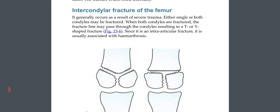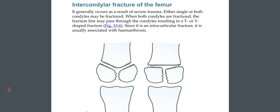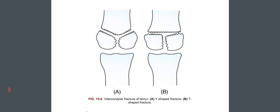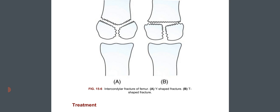Intercondylar fracture of the femur generally occurs as a result of severe trauma. Either single or both condyles may be fractured. When both condyles are fractured, the fracture line may pass through the condyles resulting in a T- or Y-shaped fracture. Since it is an intraarticular fracture, it is usually associated with hemarthrosis.